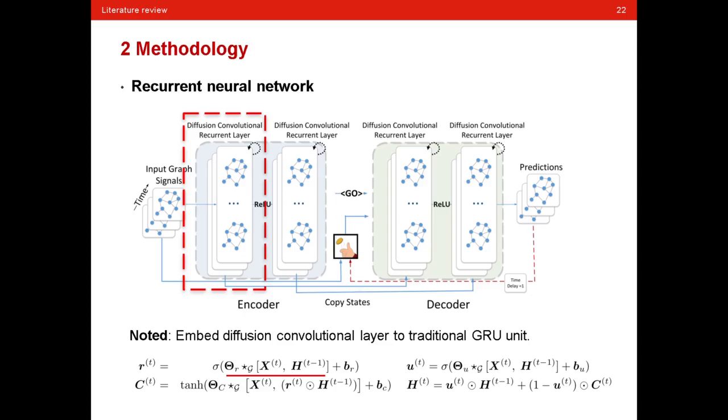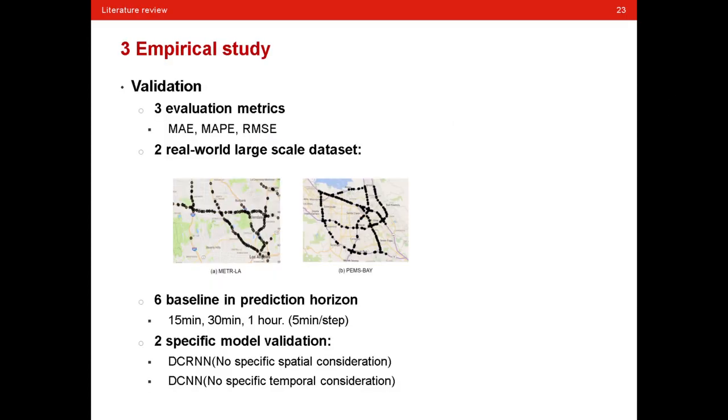And after modeling the spatial dependence with diffusion convolution, we can integrate diffusion convolutional layer to traditional GRU unit. And in this way, the overall structure can model the temporal dynamics of urban road network.